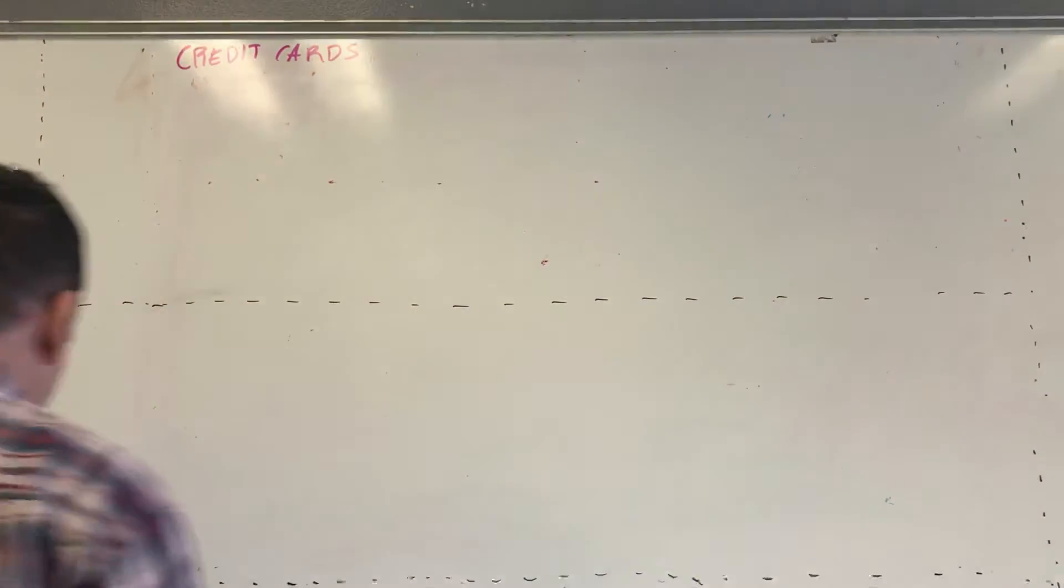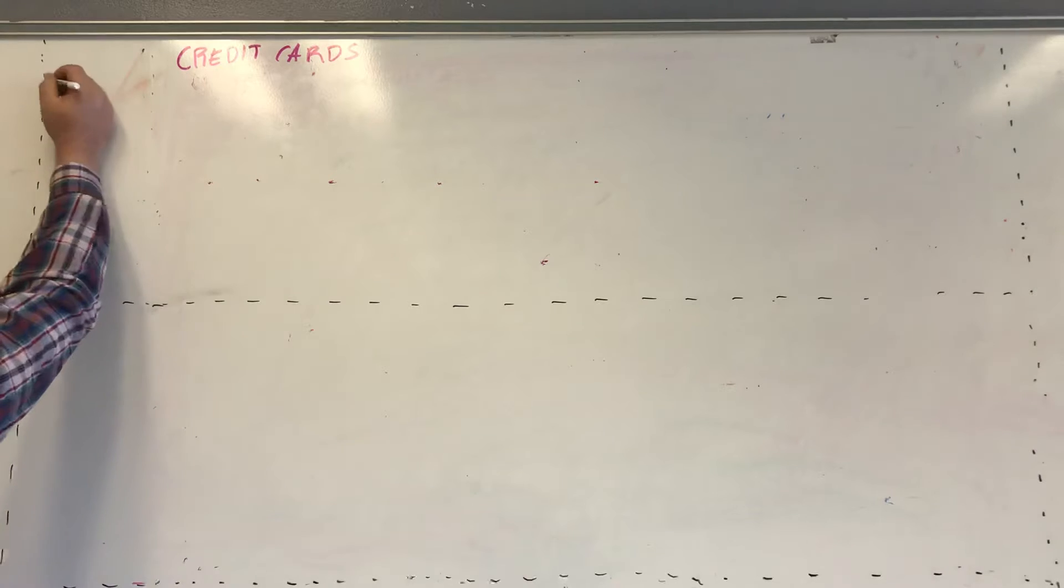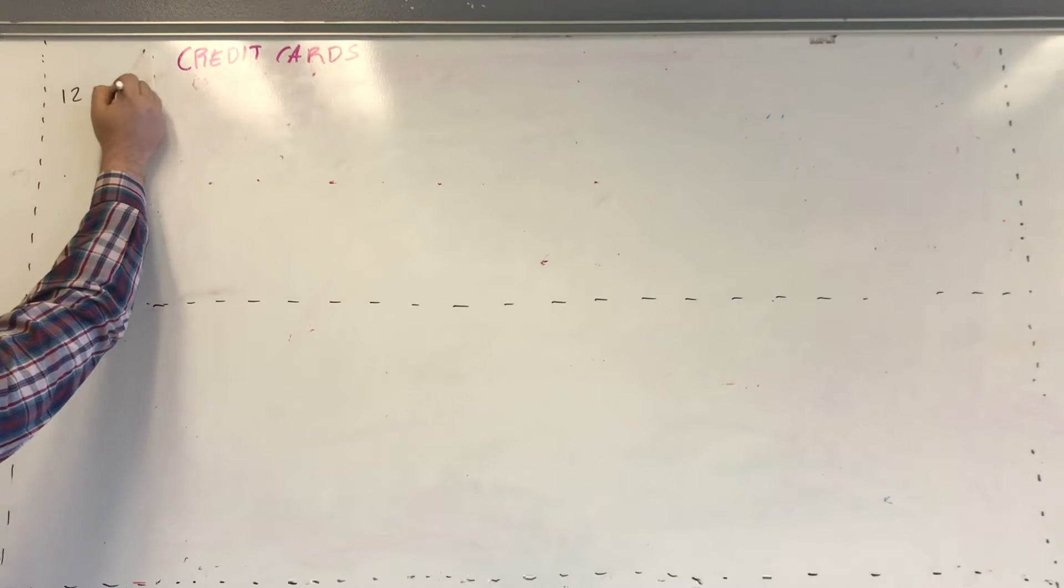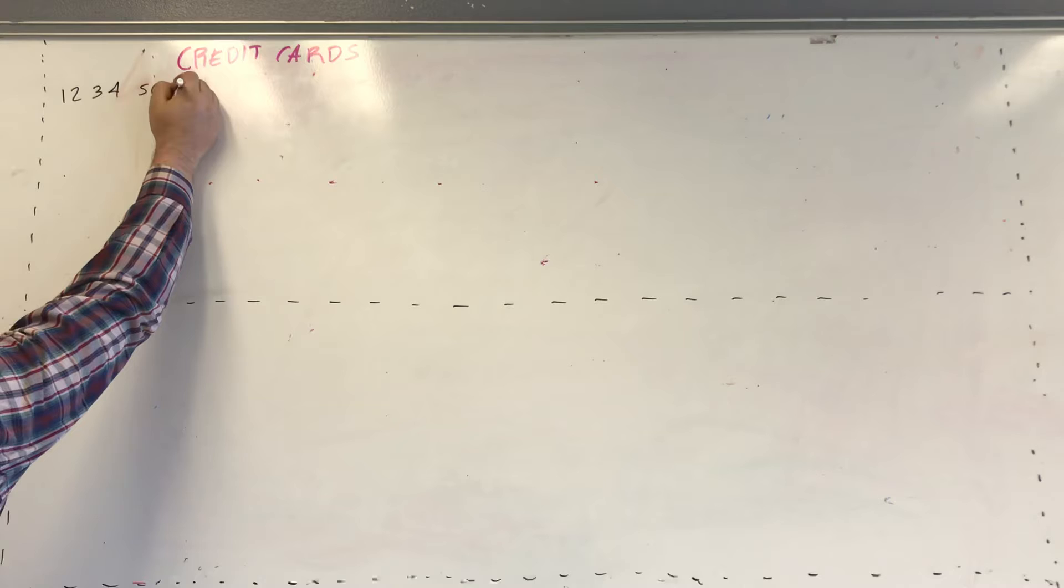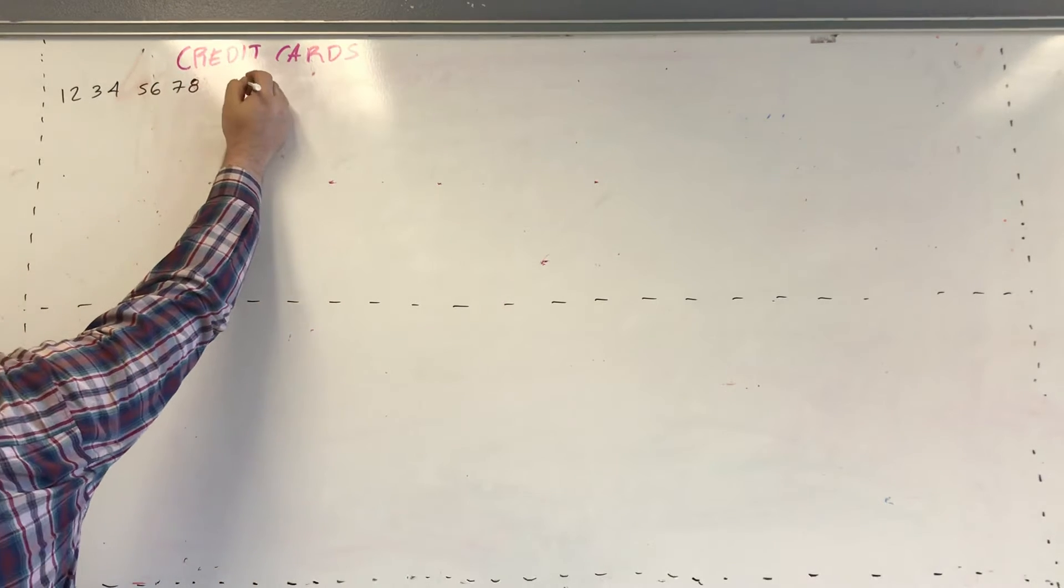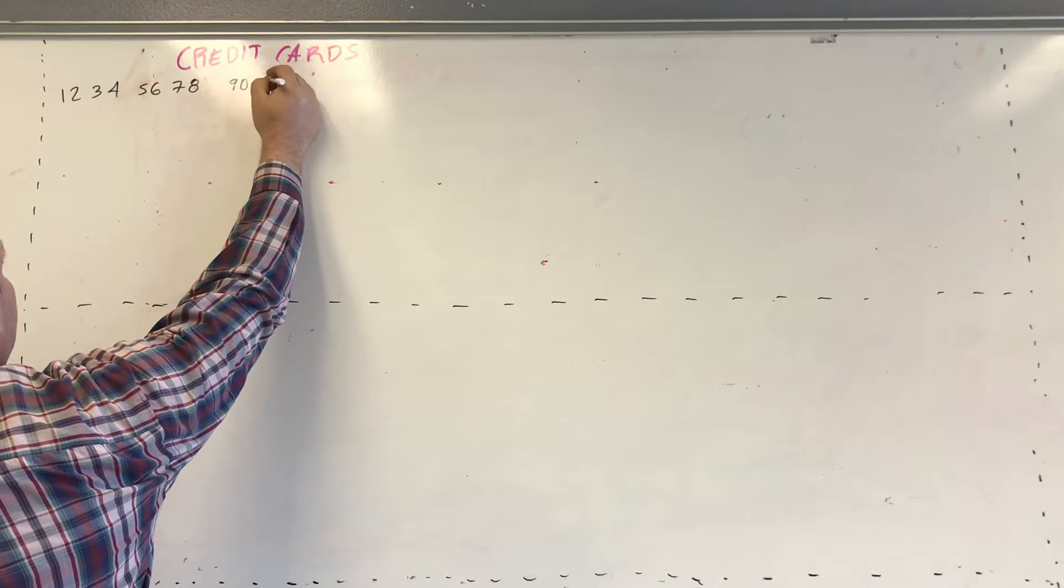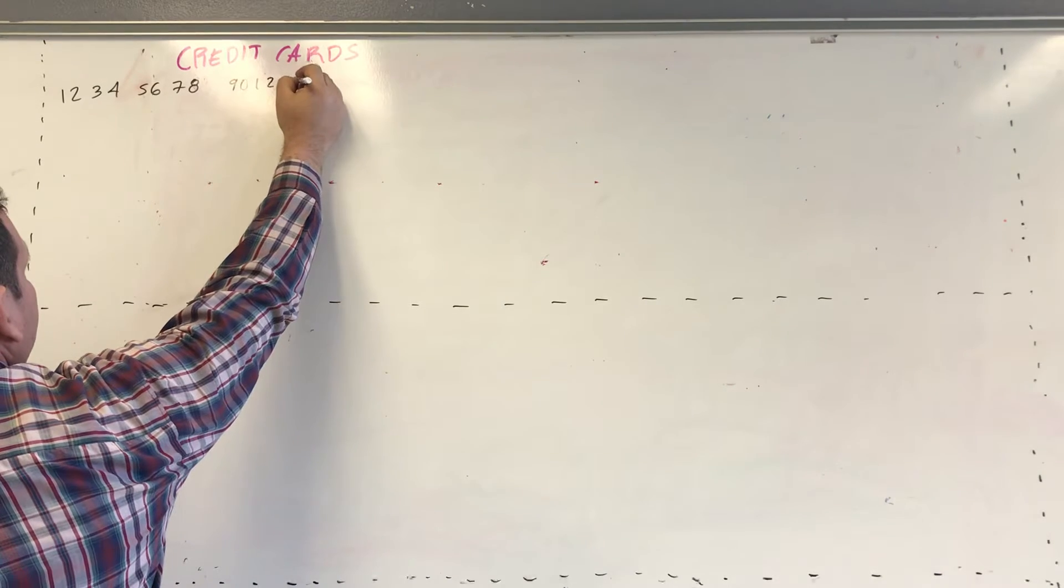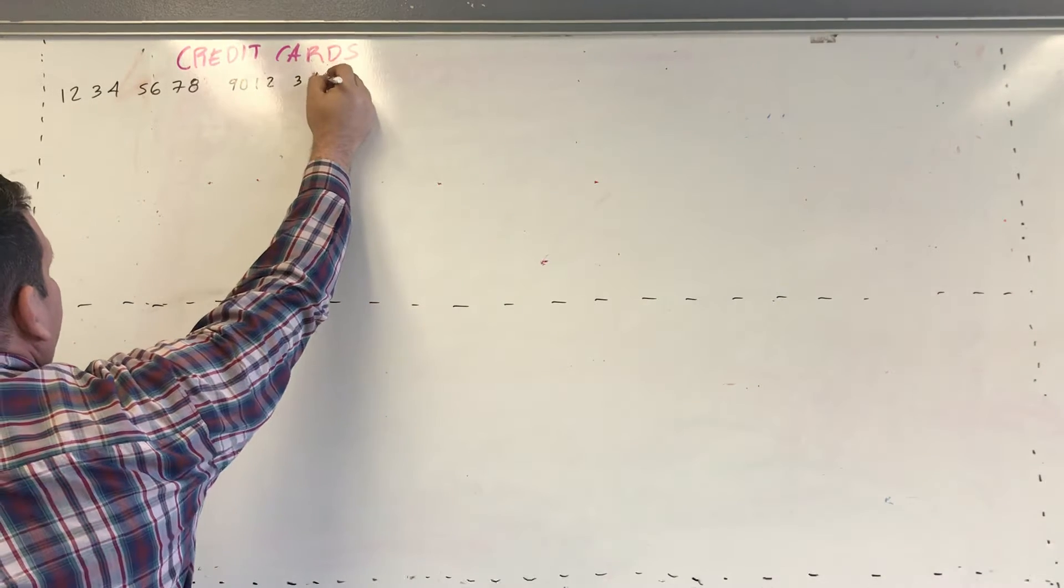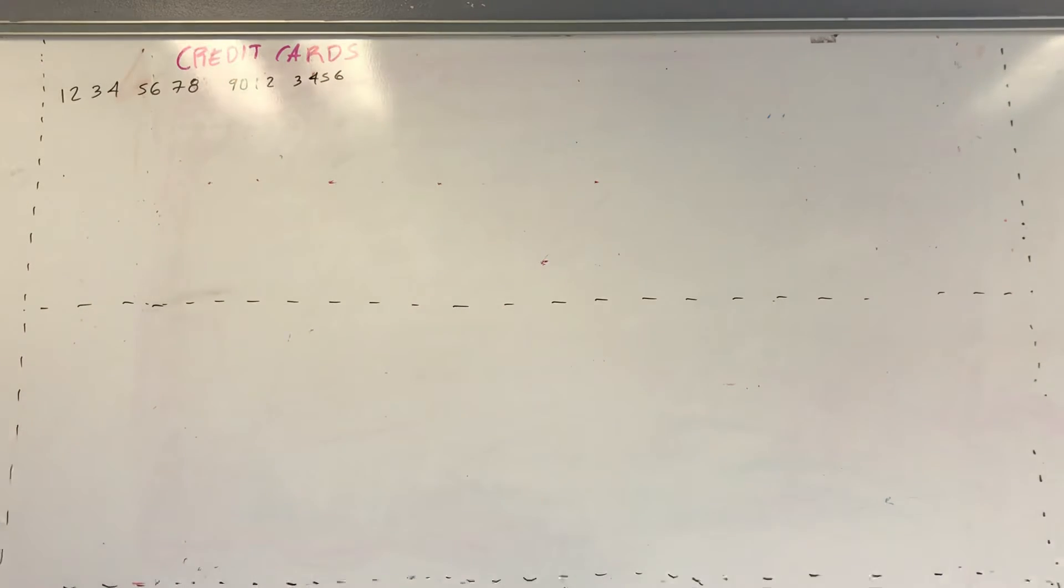So as I told you we have 16 digits. 1, 2, 3, 4, 5, 6, 7, 8, 9 and then 10, 11, 12, 13, 14, 15 and 16. So if you count we have in total 16 digits.